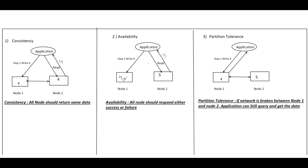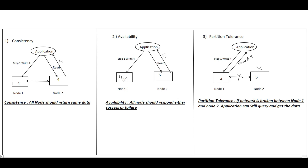Now let's see partition tolerance. Suppose we have an application with node 1 and node 2, and a network failure happens between them. When the application writes data (value 4) to node 1 and sends a read request, it can still read from node 1. Partition tolerance means that even if the network is broken down between node 1 and node 2, the application can still query, write, and read data from node 1. The system is not affected by the network failure — that means our system is partition tolerant.